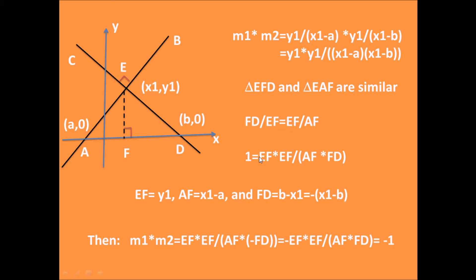we get 1 = EF*EF/(AF*FD). From the graph, we can see EF = y1, AF = x1-a, and FD = b-x1 = -(x1-b).